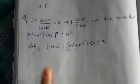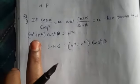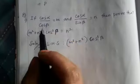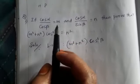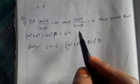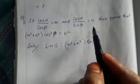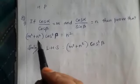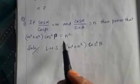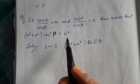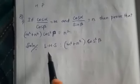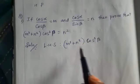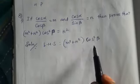Okay, next: eighth Roman, first sum. If cos α / cos β = m and cos α / sin β = n, then prove that (m² + n²) · cos²β = n². For that, let us take the LHS as (m² + n²) · cos²β.